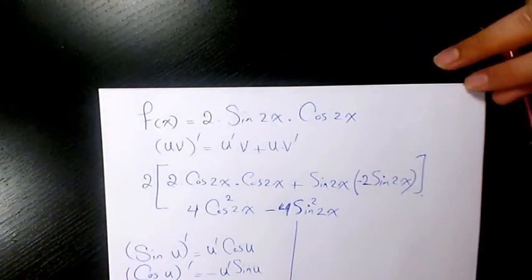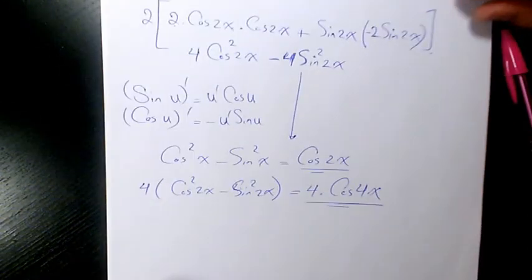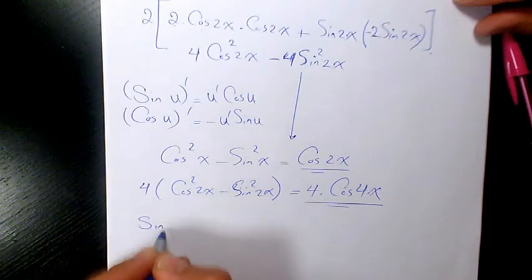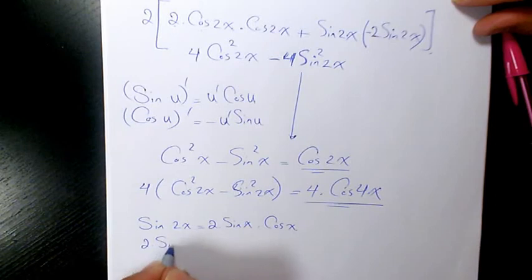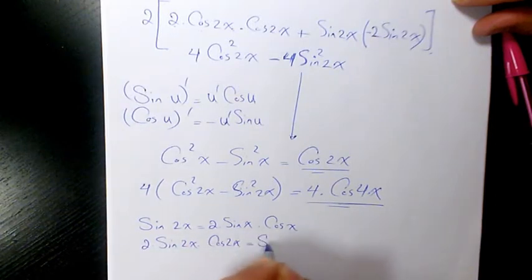Now let me solve it in another method. 2 times sine 2x cosine 2x. We know based on the double angle, sine of 2x equals 2 times sine x times cosine x. It means that 2 times sine 2x times cosine 2x will be sine 4x.